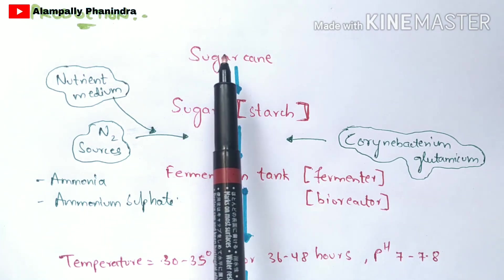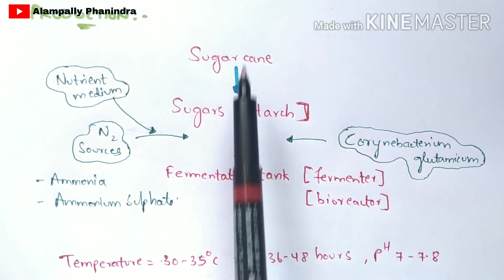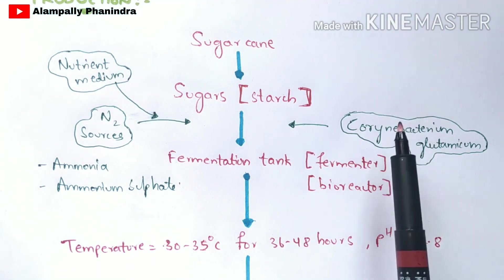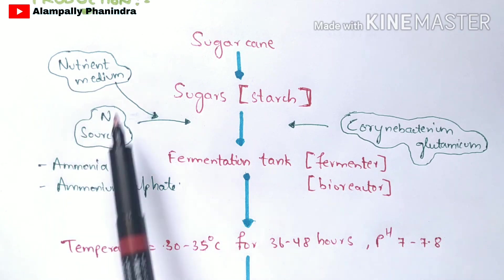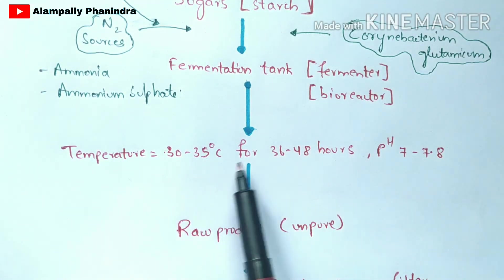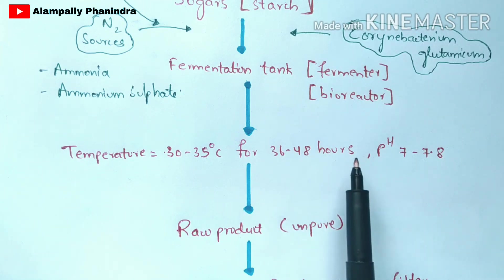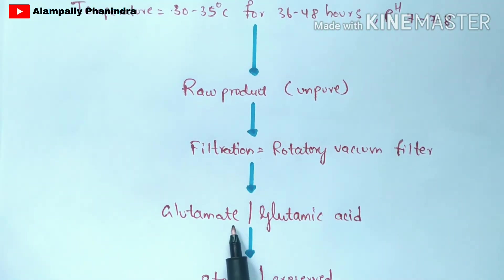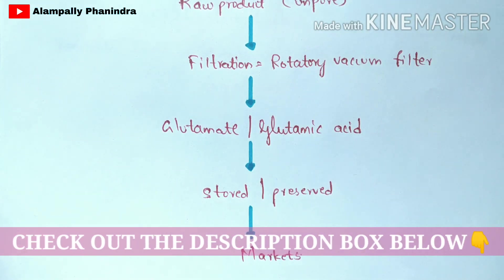You can take sugarcane or animal or vegetable sources for the production of aspartic acid. You obtain juice from them, place it in the fermentation tank, and add Serratia coli as the microorganism along with the nutrient medium and nitrogen sources. The temperature is maintained at 30 to 35 degrees Celsius for 36 to 48 hours, with continuous electricity supply and pH maintained at 7 to 7.8. The raw impure product is then filtered using a rotary vacuum filter to produce aspartic acid, which is stored and supplied to markets.